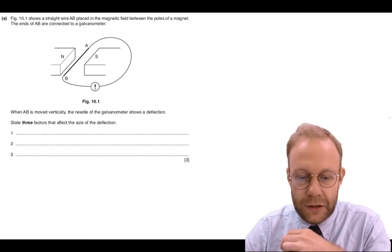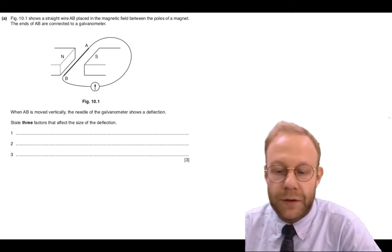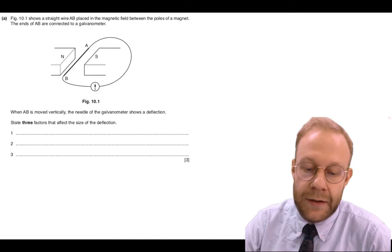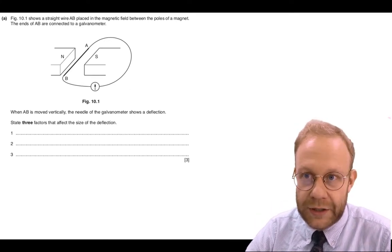Okay, for question 8, we are told that a straight wire AB is placed in a magnetic field between the poles of a magnet. The ends of AB, the wire, are connected to a galvanometer which measures electric current.